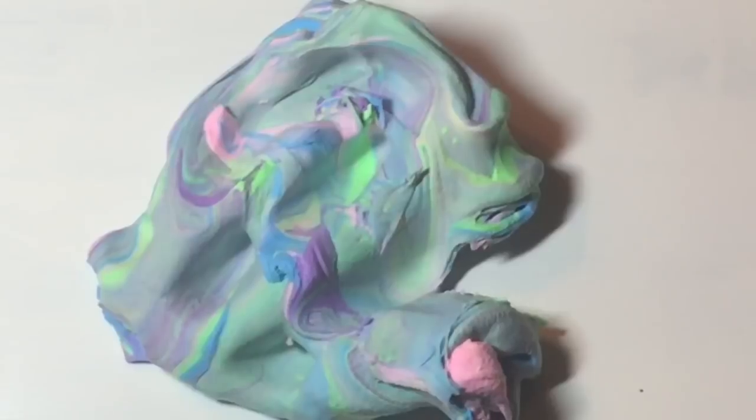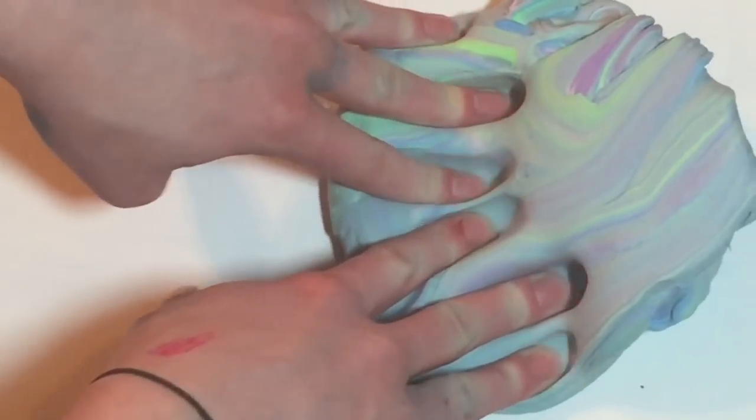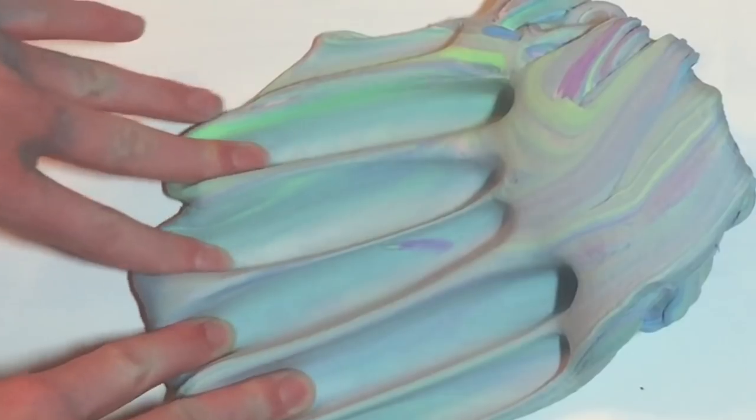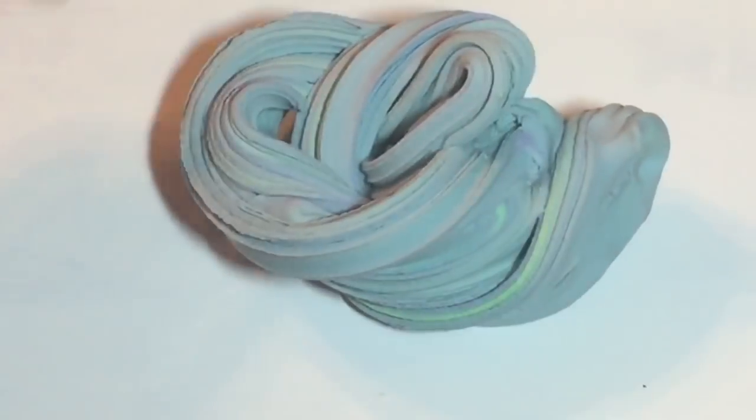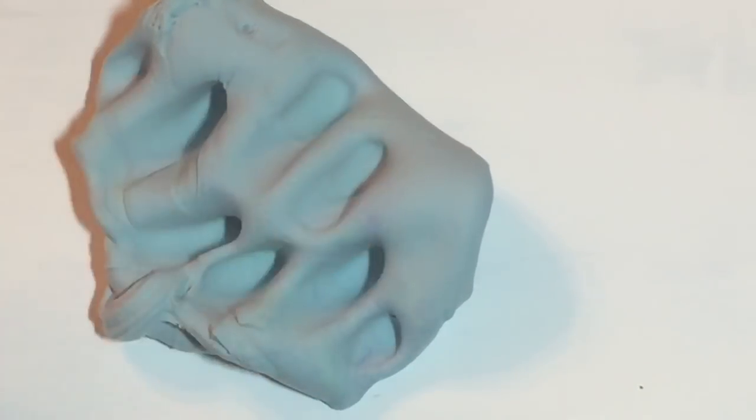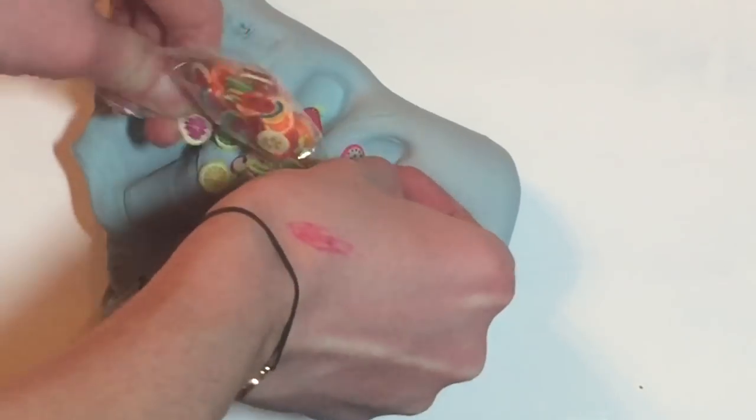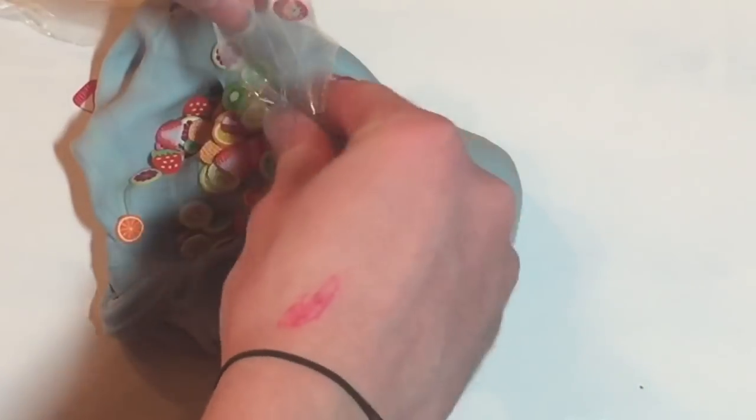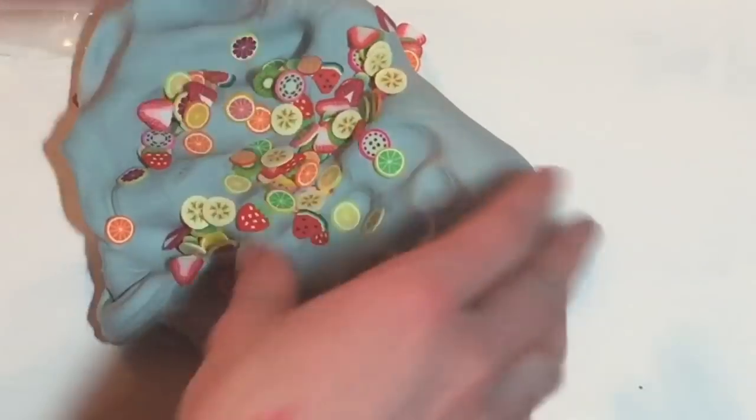And yes I will have an ASMR section at the end of this video where you get to actually listen to the slime because right now I'm doing a voiceover so you can't hear the slime, but I will do ASMR at the end. But when you mix the slime together it gets to this really pretty grayish blue color which I really like. I decided to add in the fruit slices because I thought you know why not.